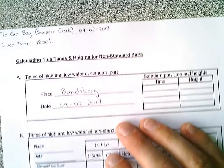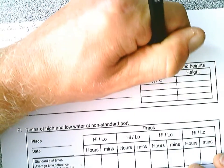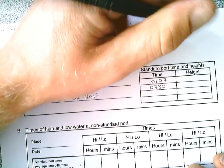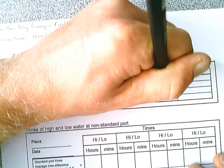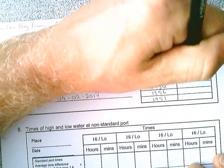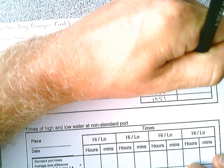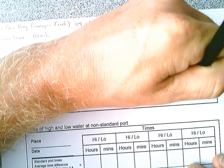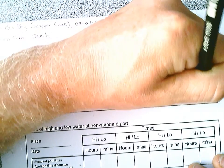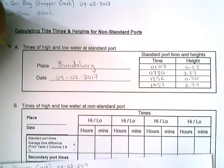So I get the times 0107, 0730, 1356, and 1951. Then my heights are 0.57, 3.37, 0.70, and 2.79. Box A is now completed.